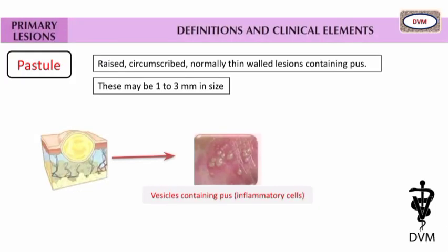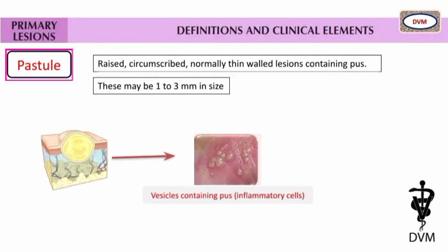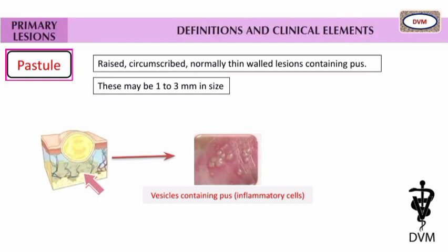The second primary lesion is pustule. It is raised, circumscribed, normally thin-walled lesions containing pus. These may be 1 to 3 mm in size. Watch the vesicles containing pus and inflammatory cells here in this 3D diagram.